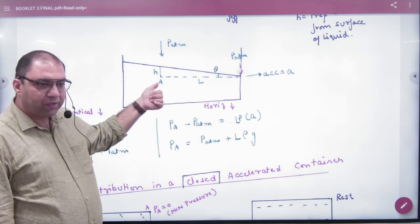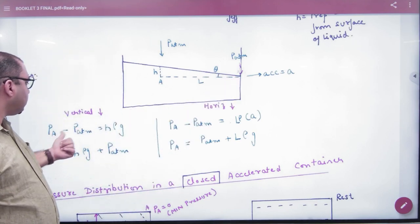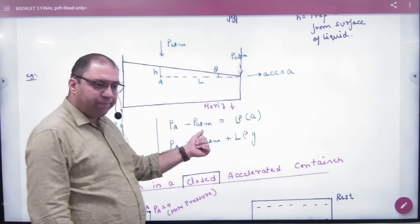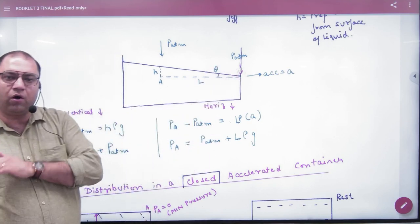Then the pressure at A minus atmospheric pressure equals H-Rho-G. G is not in horizontal direction.